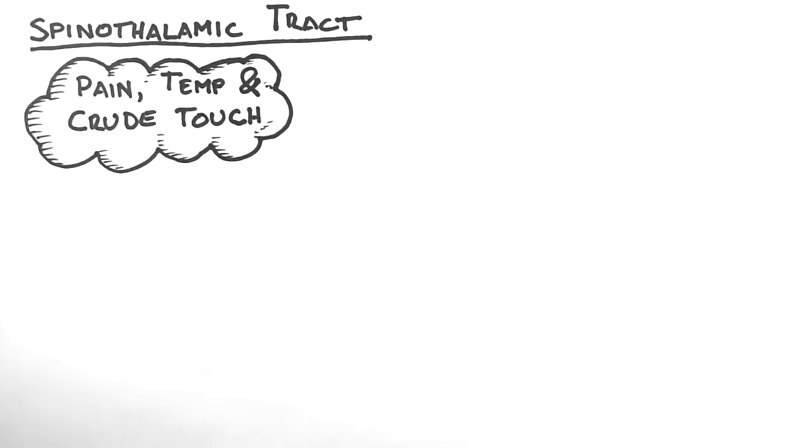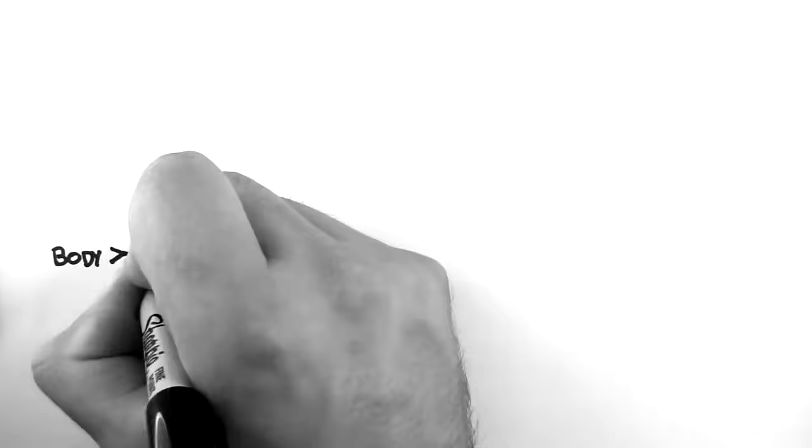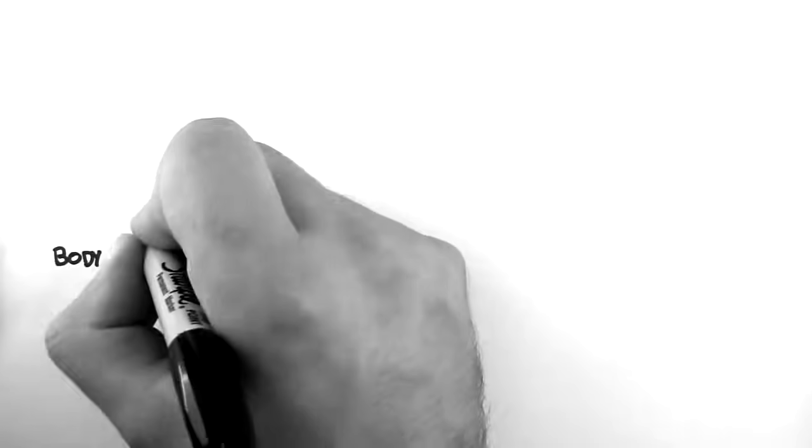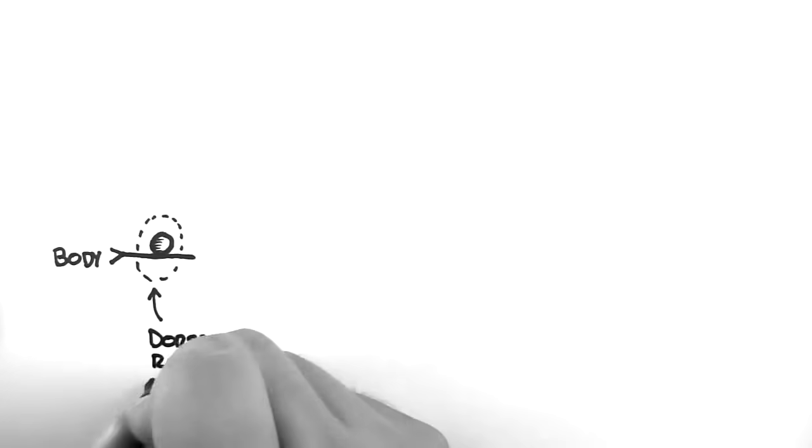The pathway begins with nerve endings or receptors in the body, sending information down the axon of a neuron. These neurons are pseudo-unipolar neurons, with cell bodies in the dorsal root ganglion, just like the ones we saw in the dorsal column medial lemniscus pathway.